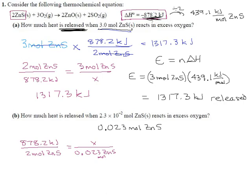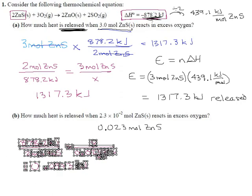If you solve that by cross multiplying, 878.2 times 0.023 divided by 2, I get 10.0993 kilojoules. That's your cross multiplication method. And now I'm going to scooch that off to the side because I need space.